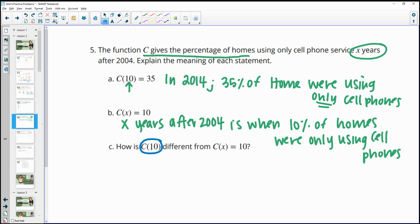B gives us the input of x and the output of 10. So this is x years after 2004, because we don't know because it's just telling us x. So x years after 2004 is when 10% of homes were only using cell phones. Then it asks us how these two things are different. So in this one, we know the number of years. So we know it's 10 years after. So this is representing the output at 2014. We know how many years and we knew the output. And here it's saying we don't know the input. So this one is just giving us that we know the percent, but we don't know what year it is yet. Meaning we don't know the input here.